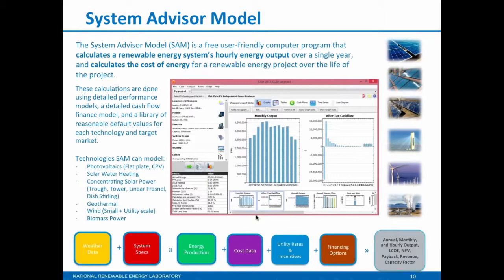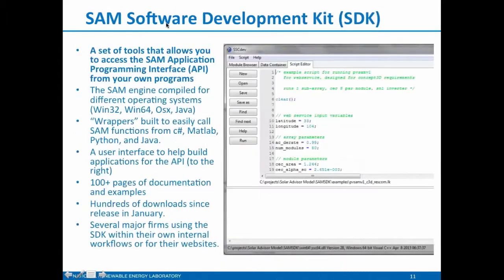SAM covers a lot of technologies — PV, solar water heating, CSP, geothermal, wind, and biomass — by far the largest chunk of funding has been from the solar program, and we are deepest in both PV and CSP modeling. The workflow goes: weather data, detailed system specs — most of our systems have several hundred inputs you can change — that produces hourly or sub-hourly energy production, which you combine with detailed cost data, utility rates, incentives, and financing options to get the total package of metrics. Many users just use it for the performance part, but many within NREL are interested in the financial calculations.